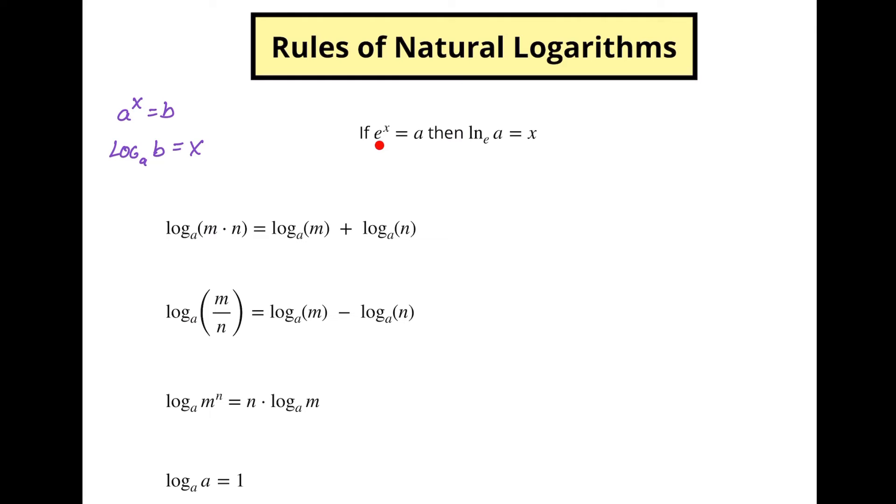So we're saying we've got the number e to some power and that equals a number. So then we write the natural logarithm of that result is equal to the exponent. So it's no different than if we were to say this over here. These two things, let's line these up. Now I know I used a's differently here, but let's look at the structure of these things.